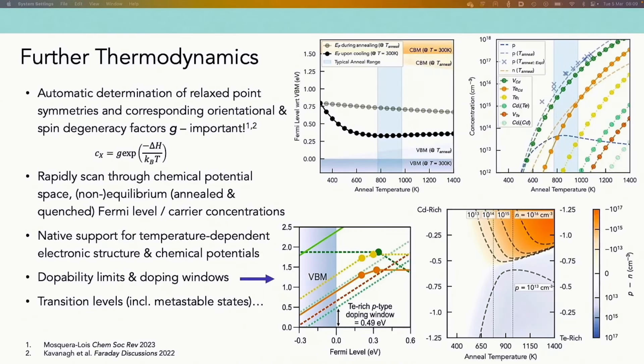So lastly, just some notes on some of the further thermodynamic analysis functions that are built into DOPED. So firstly, DOPED automatically determines your relaxed point symmetry, which is actually a bit harder than it sounds, and from this the corresponding orientational and spin degeneracy factors for your defects. These can contribute to this g_degeneracy factor or prefactor in your defect concentration equation and are actually quite important. They're every now and again neglected in the literature, but they can make over two orders of magnitude difference in your predicted concentrations, so they're really important to include.